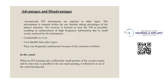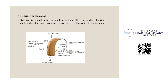When the ITE hearing aid has a sufficiently small portion visible in the concha and the outer face is parallel to the ear canal opening, this is referred to as an in-the-canal hearing aid. For receiver-in-the-canal aids, the receiver is located in the canal rather than the BTE case. An electrical cable rather than an acoustic tube runs from the electronics to the ear canal.